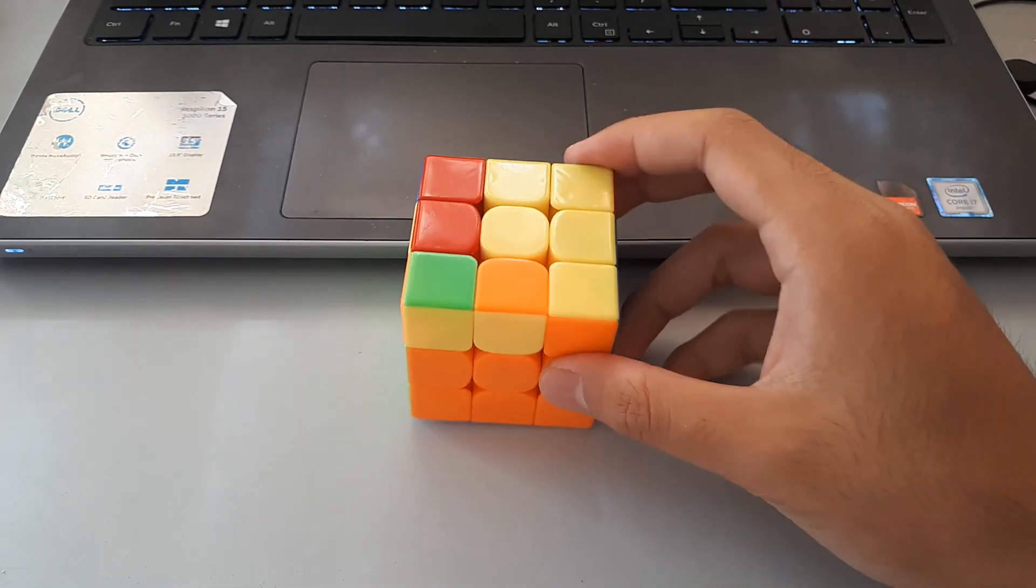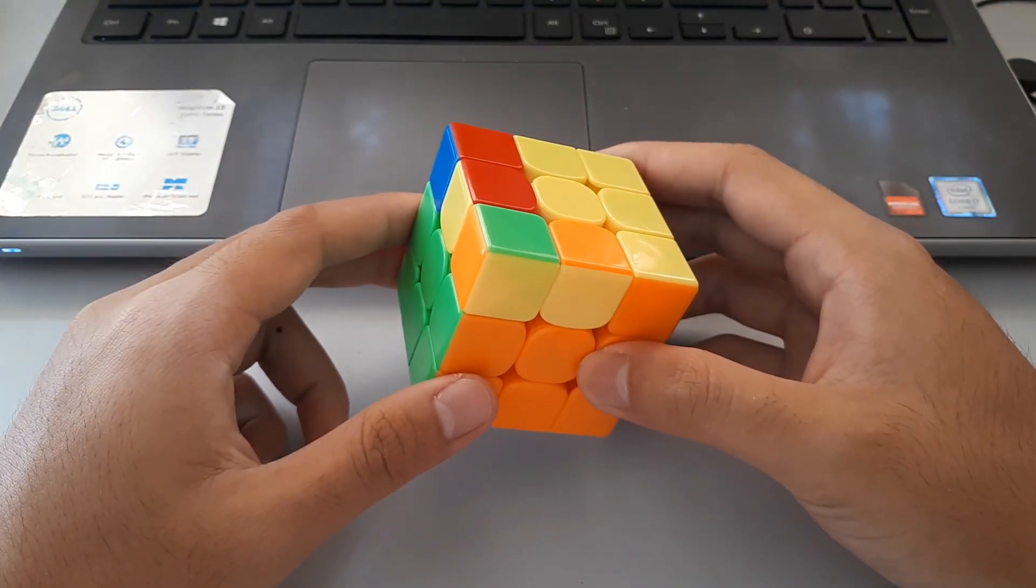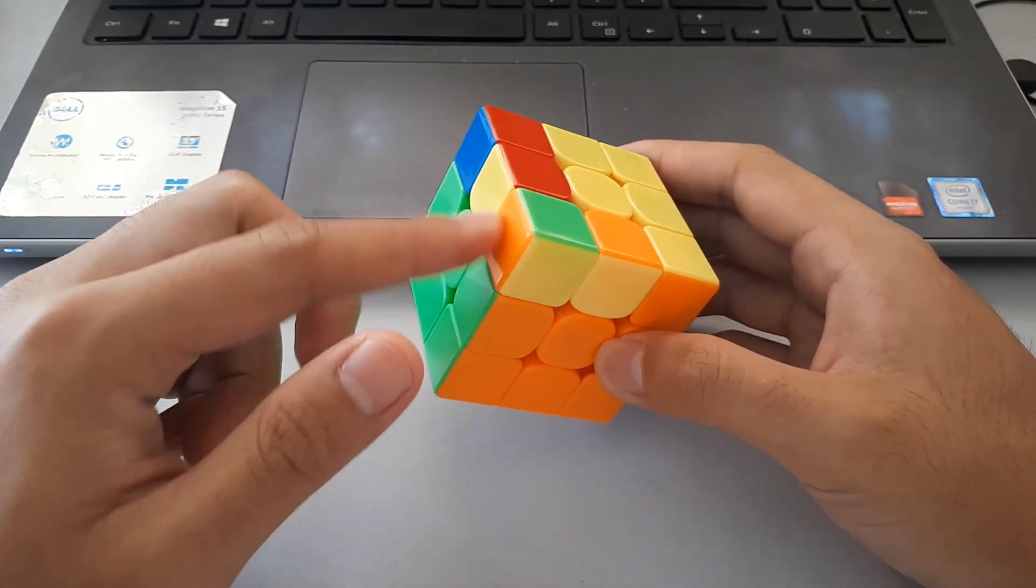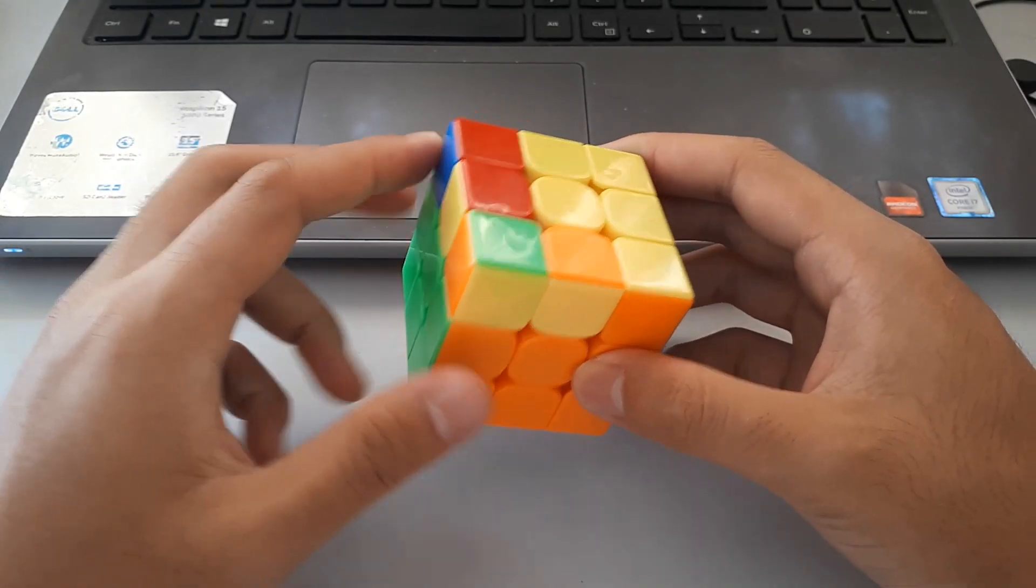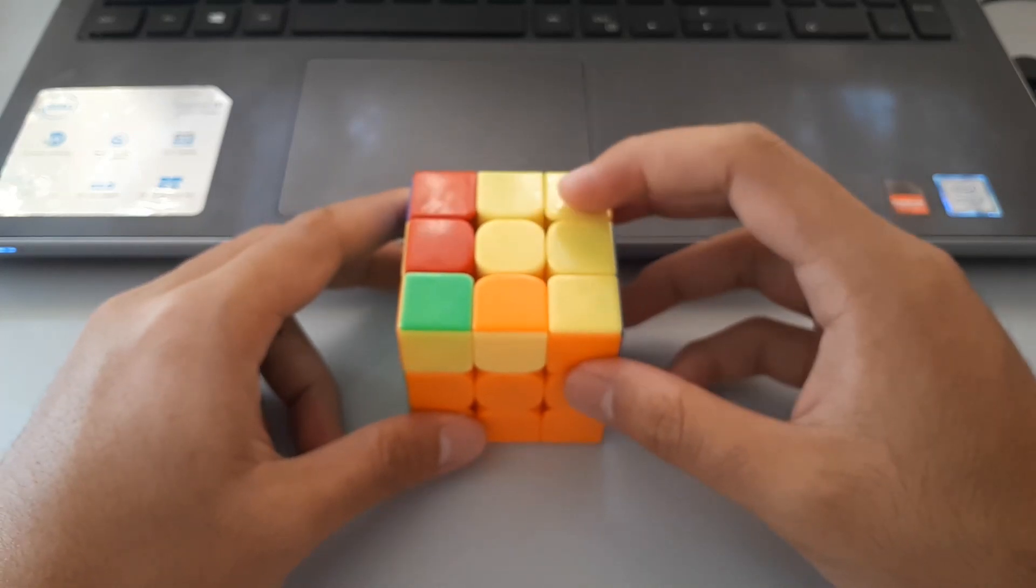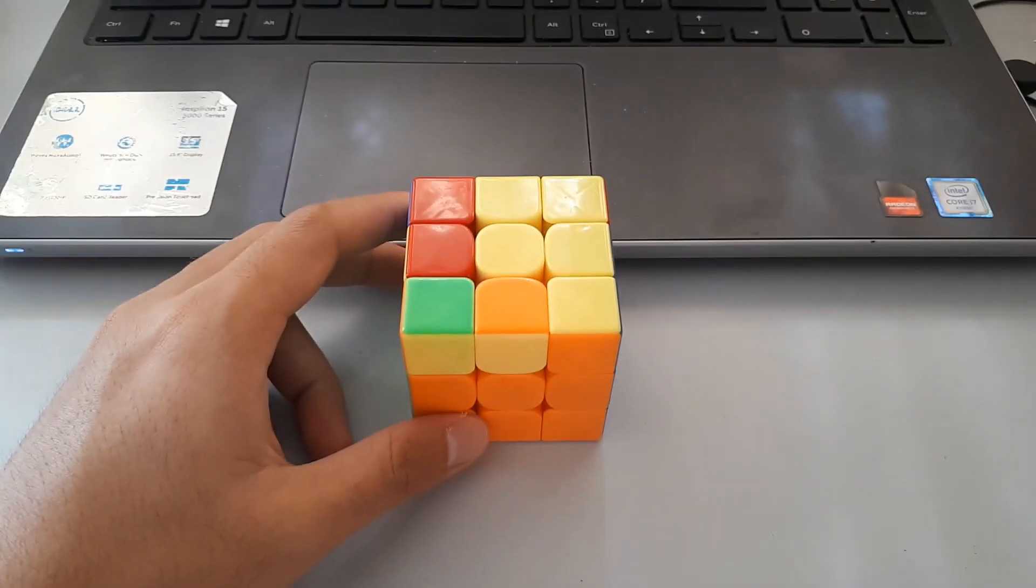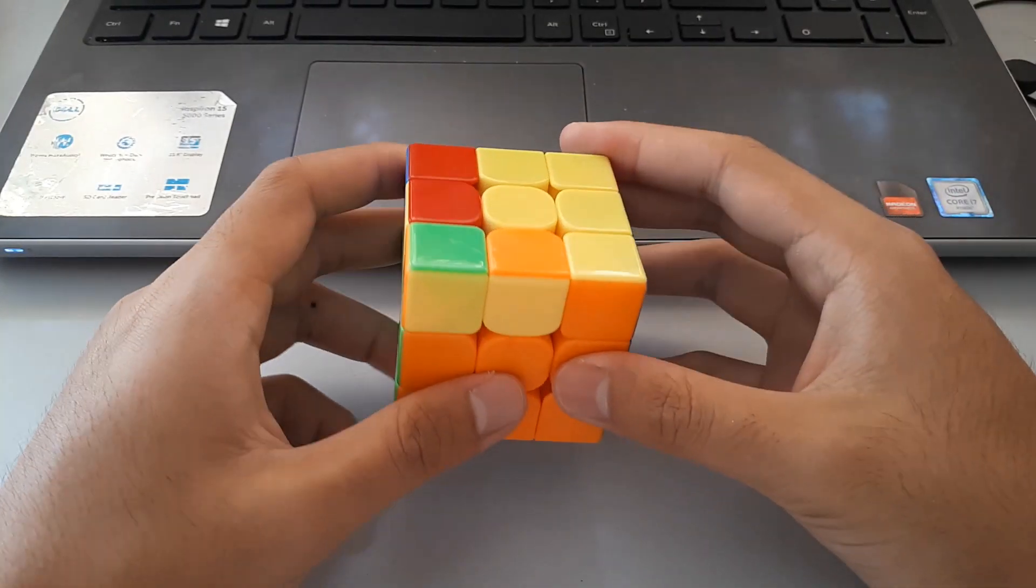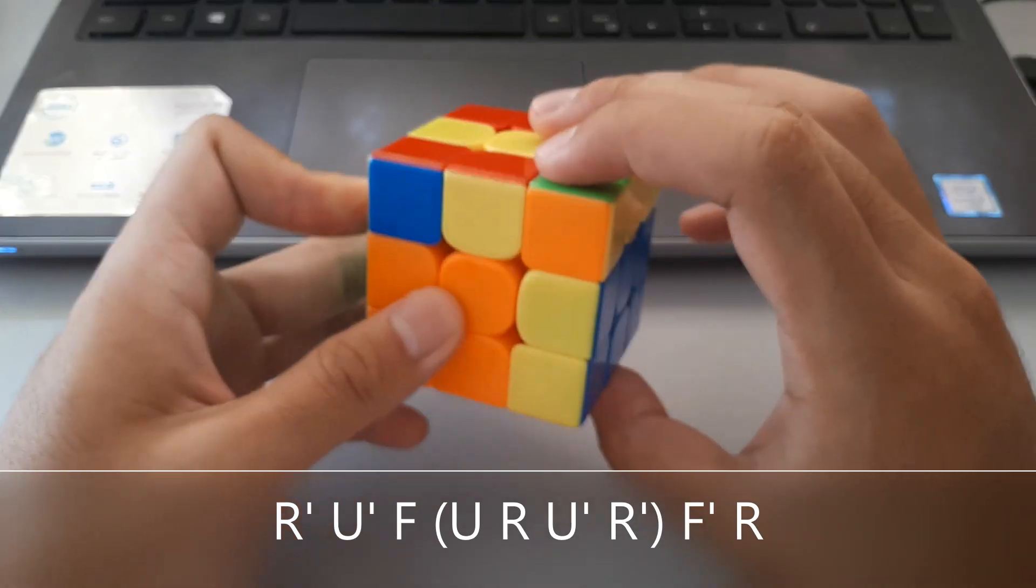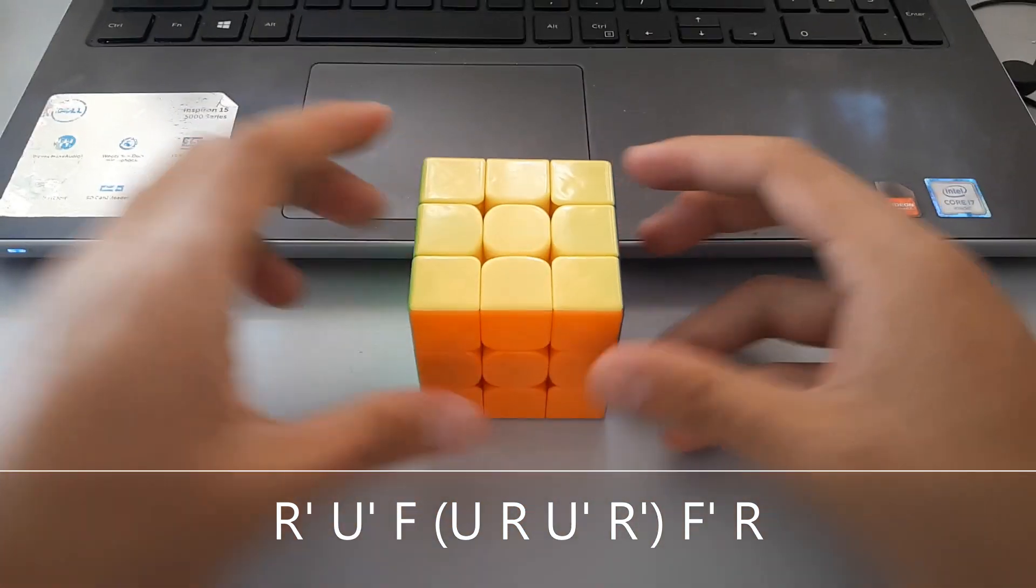Our next P shape is this case here. This can be recognized or differentiated from the other ones with there not being a bar on this side. We notice that the P shape is towards the right, so we want to use our right hand for this algorithm. We've got the inverse sexy here, and then that.